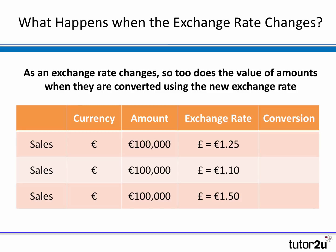We've got a table which shows three different exchange rate scenarios, and in each case the sales are 100,000 euros. The question is: what is the pound value of those euros at different exchange rates? Starting with the first exchange rate — one pound equals 1.25 euros — if we convert 100,000 euros of sales into pounds, that converts into £80,000.